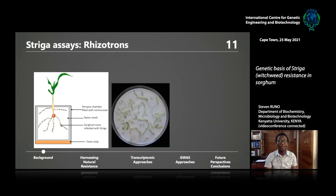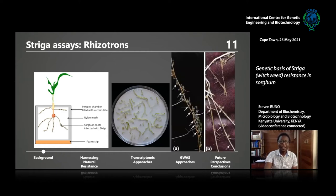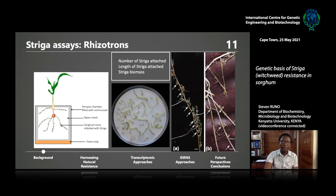We allow interaction between host and parasite for about 21 days, then score for resistance. The metrics we use are Striga length, Striga number, and Striga biomass. We harvest all the Striga infesting the host crop, place them on a petri plate, photograph them, and use image analysis to determine the number and length of attached Striga, and weigh them for biomass. More attachments means less resistant; fewer attachments means more resistant. This is a really neat and reproducible way of determining resistance.